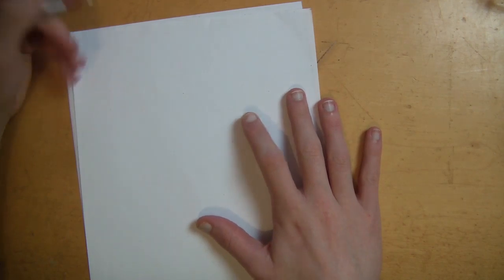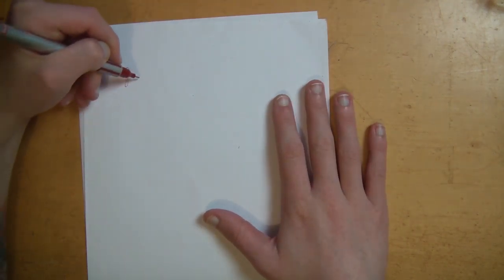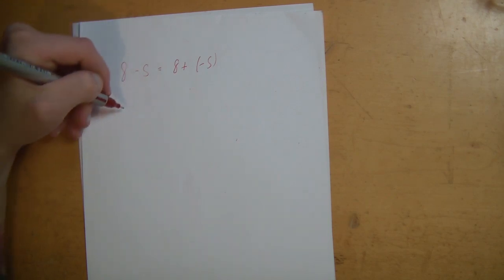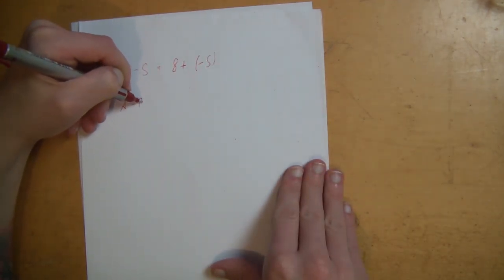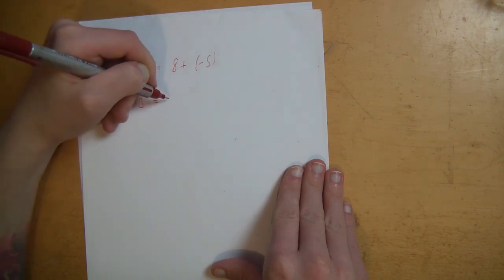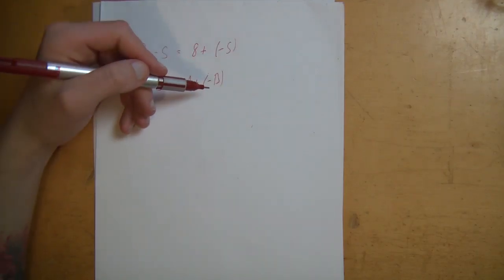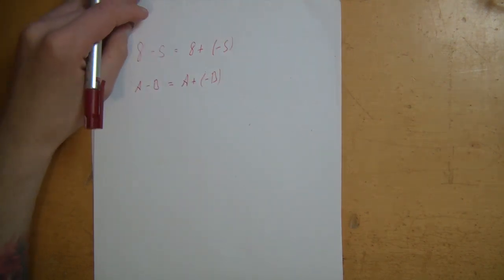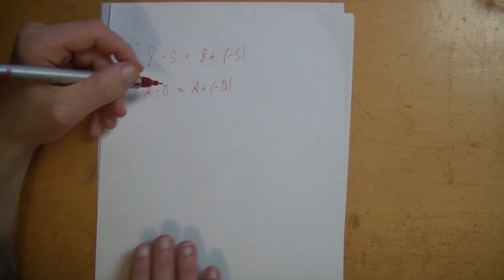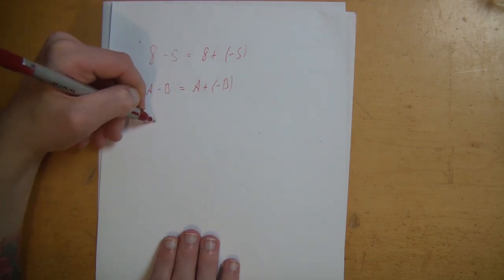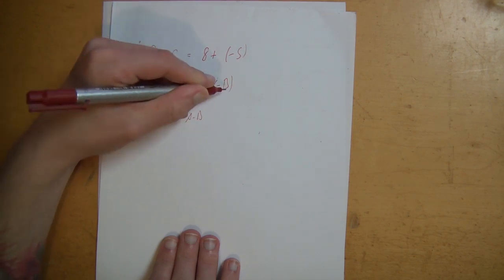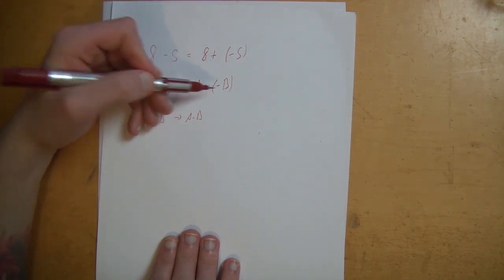The cool thing about subtraction is that subtraction can be expressed with addition. So, 8 minus 5 equals 8 plus minus 5 — that is the same. And the same is true for binary: A minus B is the same as A plus minus B. So the question is, how do we convert a binary number into a negative binary number? Because if we do that, we turn A plus B into A minus B.